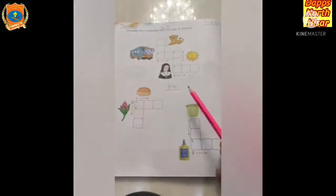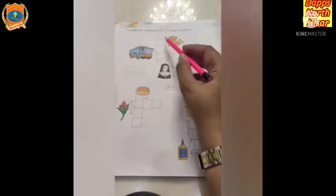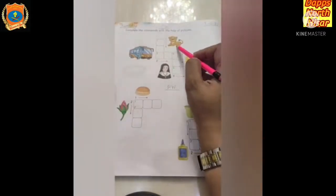Here we have some pictures. We have to complete the basis of the crossword. Is it clear to everyone? So let's start. The first picture is what is this? This is a cub.